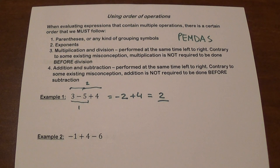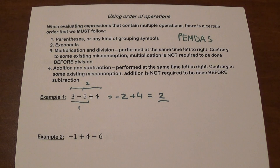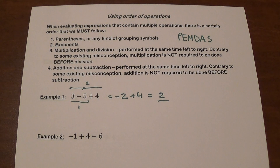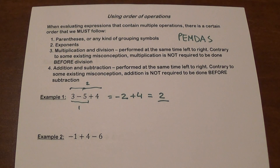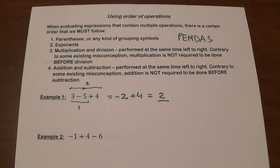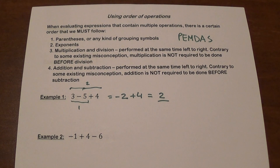I've seen it many times where students look at this and think, 'there's a plus sign, I'll do 5 plus 4 first,' then subtract from 3 — that is not correct. Remember, you cannot get two different answers for the same problem. Math is very strict about this; there is only one result.